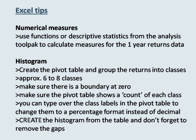You will also need to make a histogram to visually show the pattern of the one year returns data. Create the pivot table and group the returns into classes, keeping in mind that we would be aiming for six to eight classes for this amount of data. As it is useful to be able to easily distinguish between positive and negative returns in this context, it is useful to also make sure that a class boundary occurs at zero. You can try some different class widths with the grouping in Excel and look at the results to help you decide what would be a good class width to use.